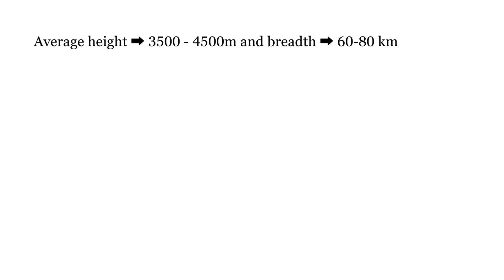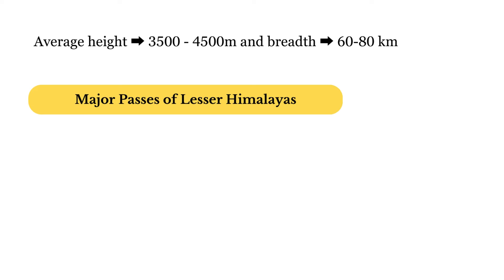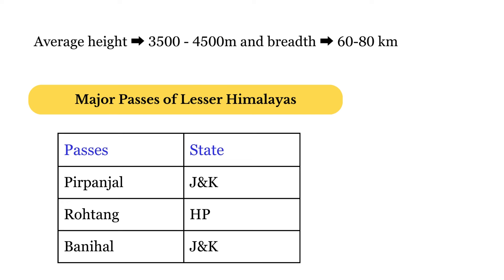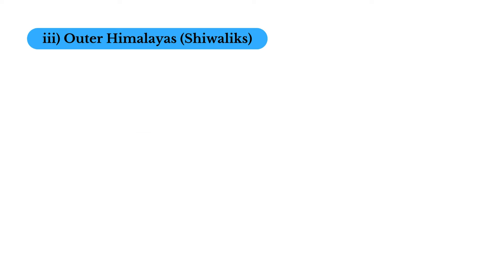The average height of the Lesser Himalayas is 3500 to 4500 meters and the breadth is 60 to 80 kilometers. Major passes of the Lesser Himalayas: Pir Panjal Pass is in Jammu and Kashmir, Rohtang Pass is in Himachal Pradesh, and Banihal Pass is in Jammu and Kashmir.